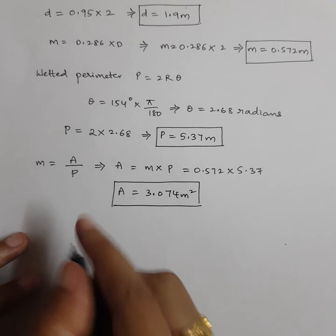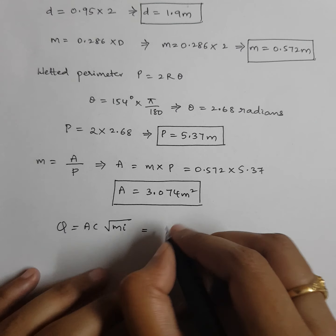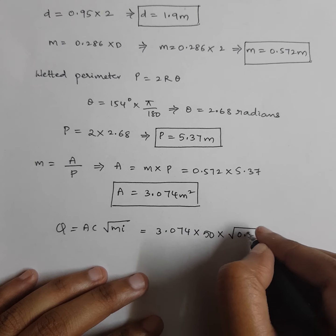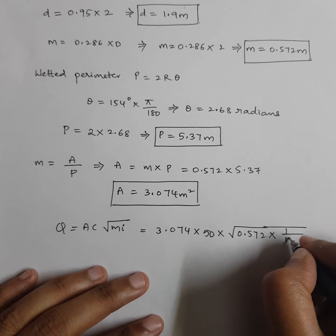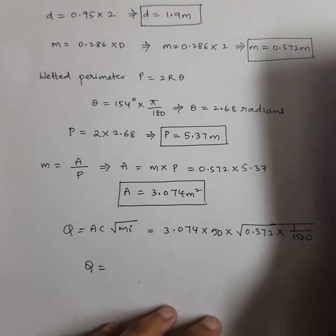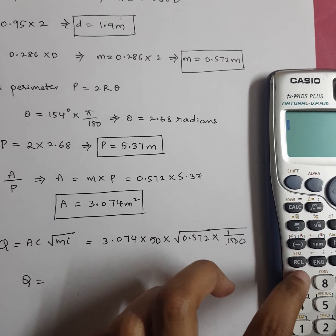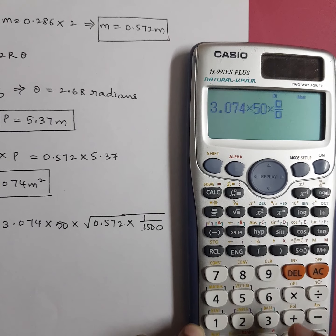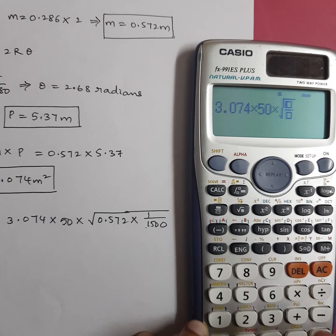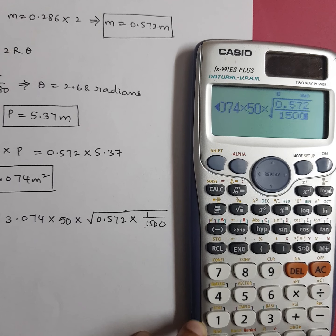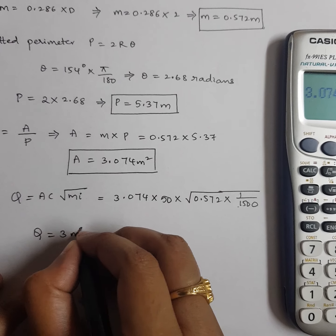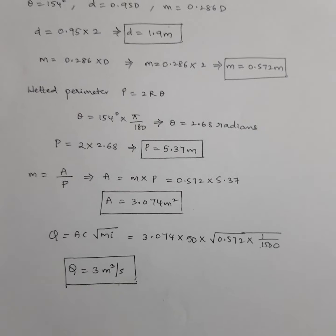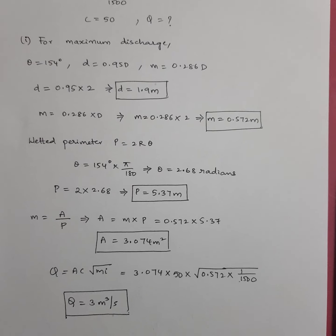Now calculate Q: Q equals A·C·√(MI) equals 3.074 into 50 into √(0.572/1500). Solving: Q equals approximately 3 m³/s. This is how you calculate maximum discharge for the most economical circular section. Hope you understood this video, thank you.